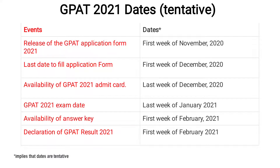GPAT 2021 Important Dates (tentative): Release of GPAT application form 2021 — 1st week of November 2020. Last date to fill application form — 1st week of December 2020. Availability of GPAT 2021 admit card — last week of December 2020. Availability of answer key — 1st week of January 2021, with final answer key in 1st week of February 2021. Declaration of GPAT 2021 result — 1st week of February 2021.